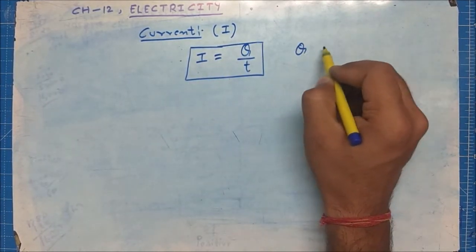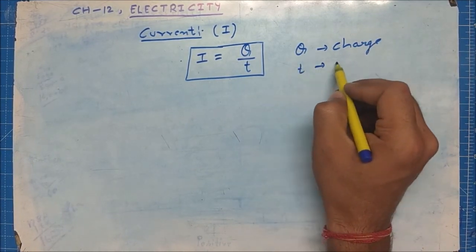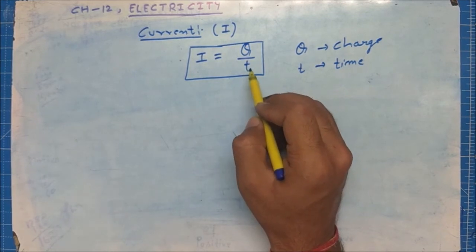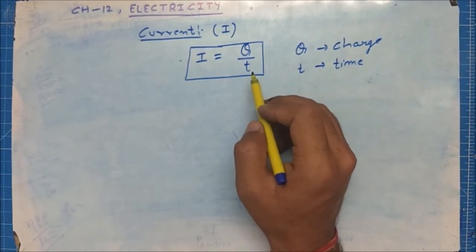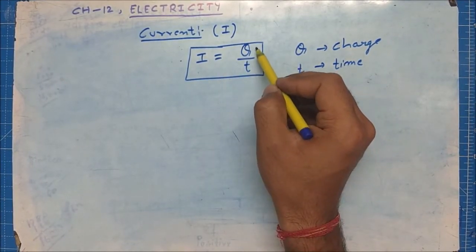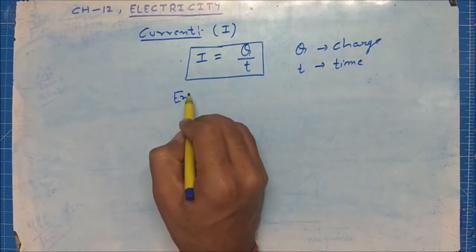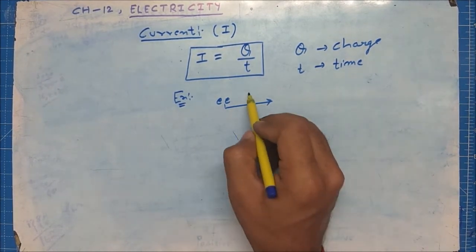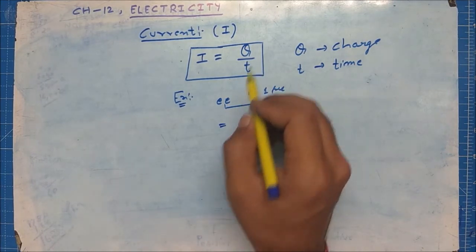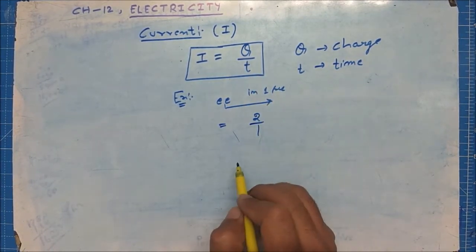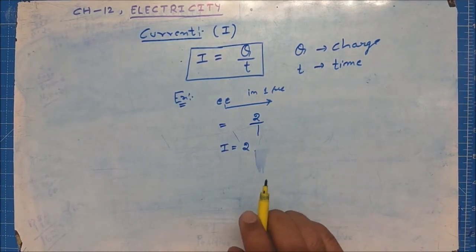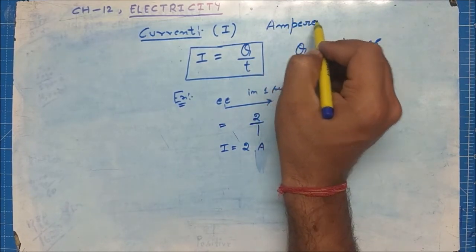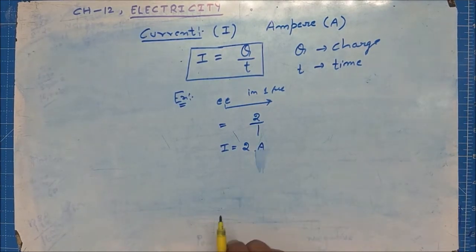Where Q is charge and T is time. When we divide anything by T, we call it a rate. So current is the rate of charge flow — how much charge flows in how much time. For example, if two electrons are flowing in one second, then Q = 2 divided by T = 1, so current I = 2 ampere. The unit of current is ampere, represented by the symbol capital A.